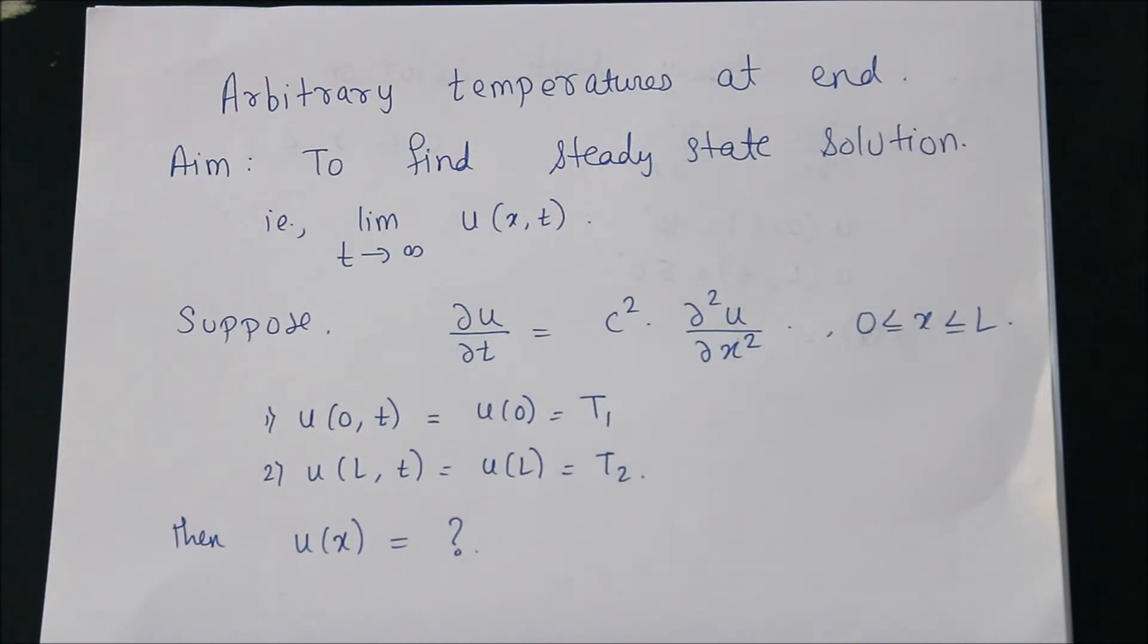As my t goes to infinity, those solutions approach zero. That's how heat works—as time increases, the temperature keeps on decreasing. Such a solution is called a transient solution. The solution which depends on time is called transient, and which is independent of time is called steady state solution.